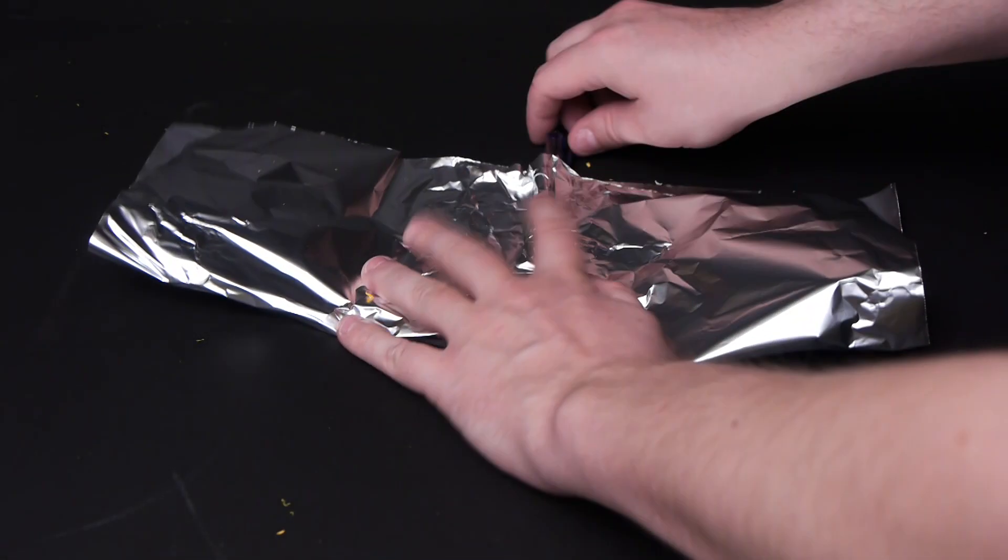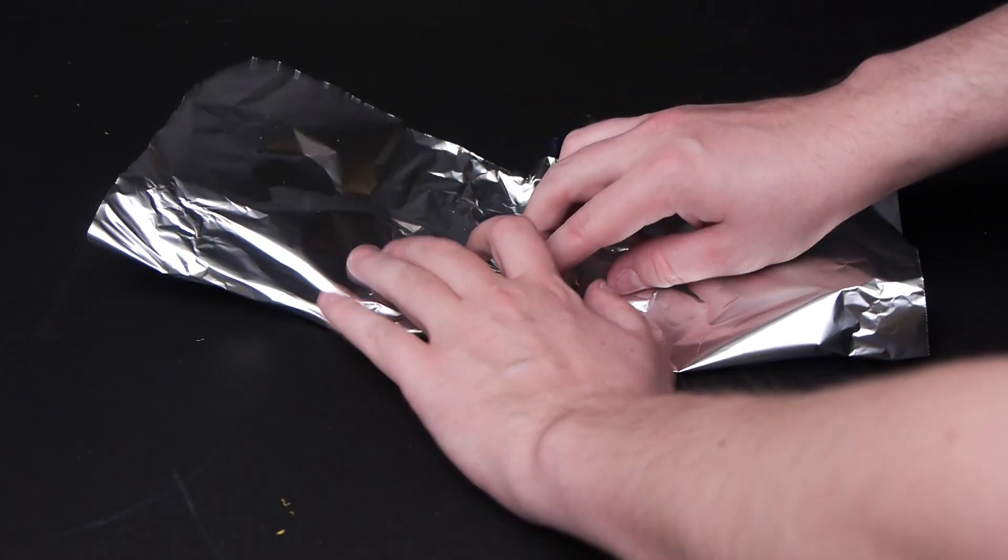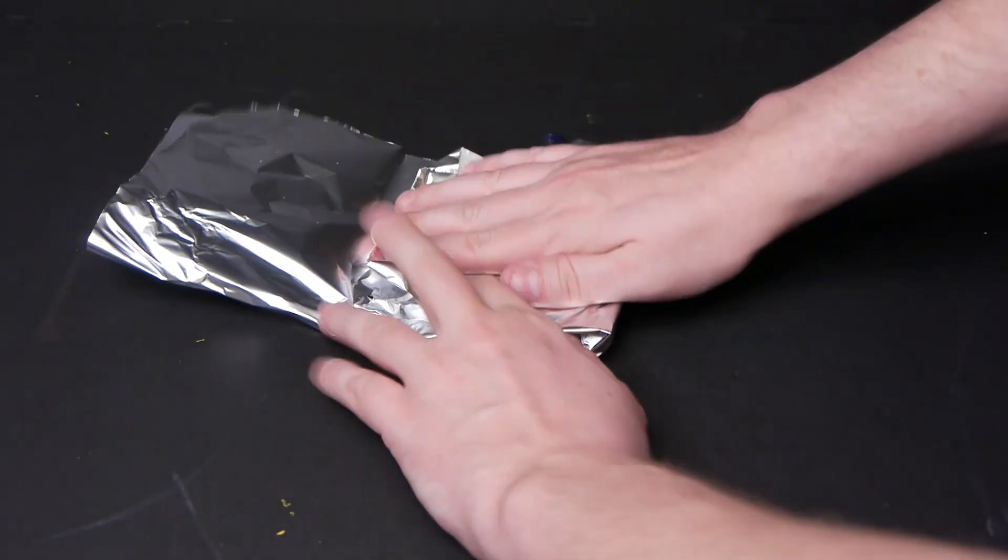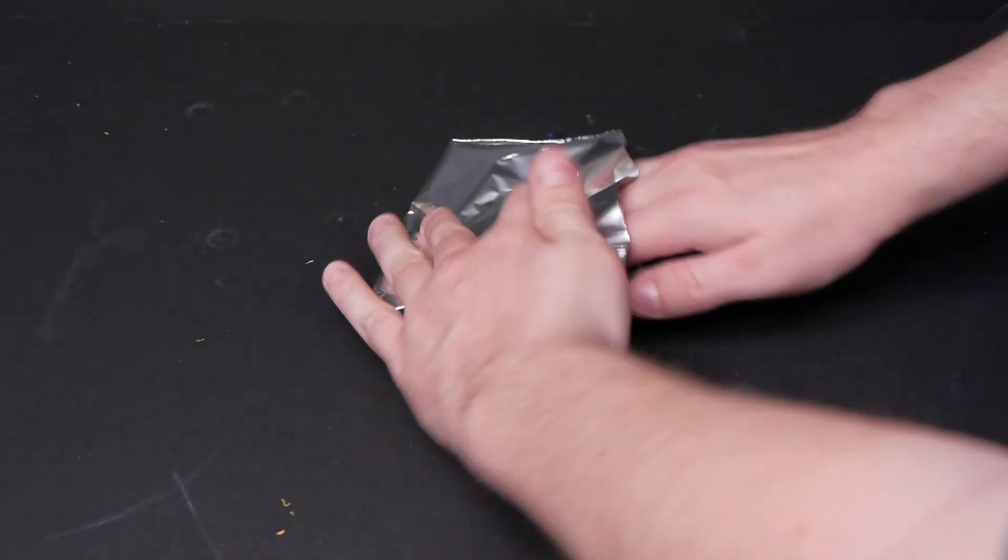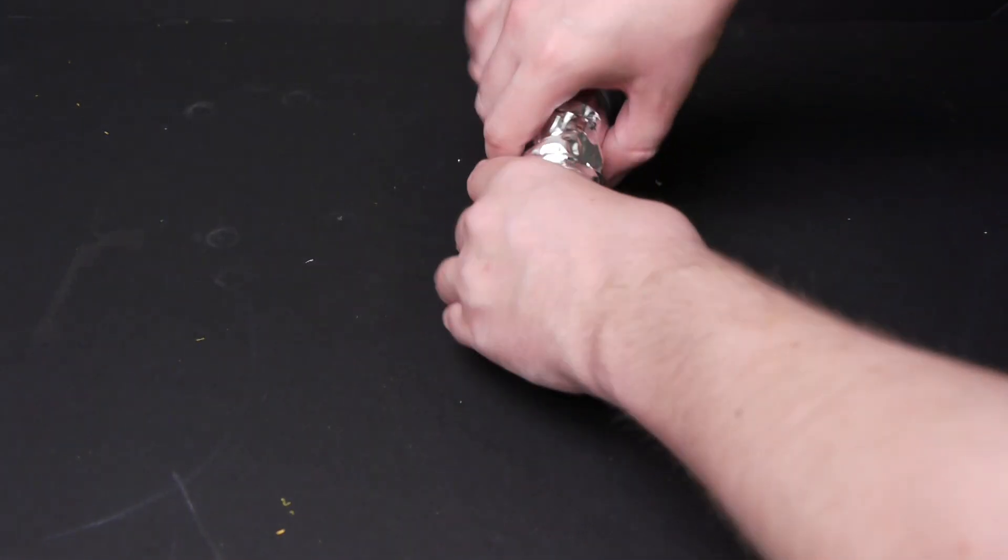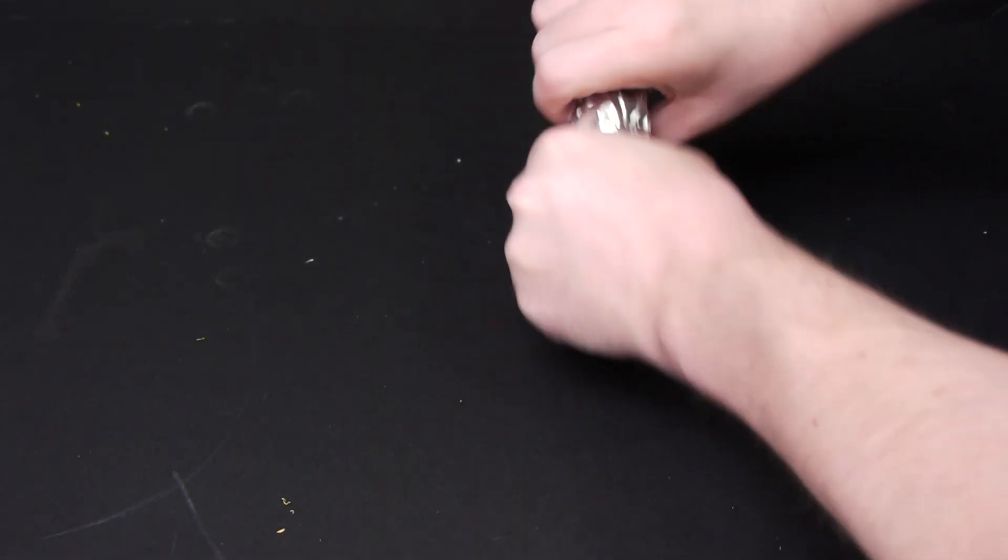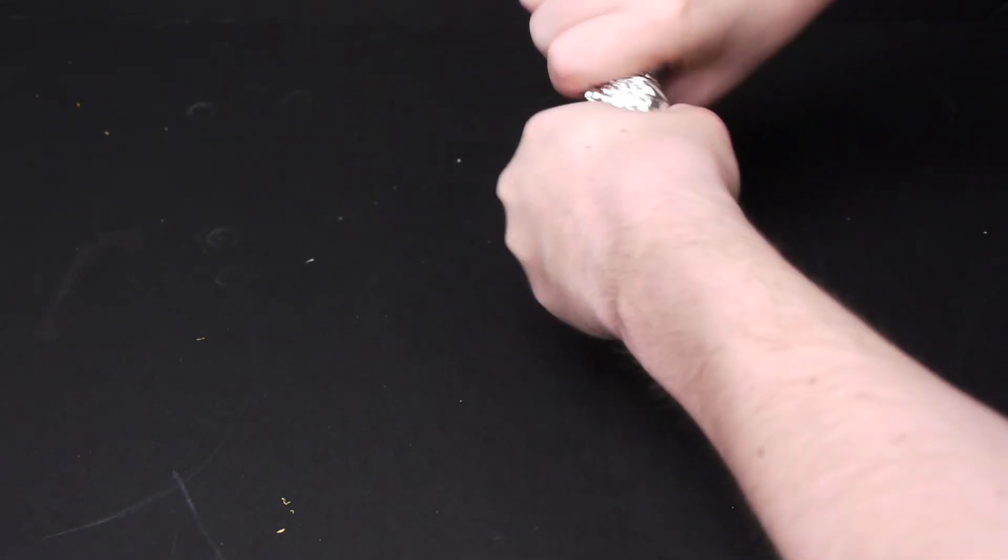So now that I have the pen there, I'm going to wrap the tin foil all around the shards. Now crunch it up, and make sure no air is getting in from the bottom.